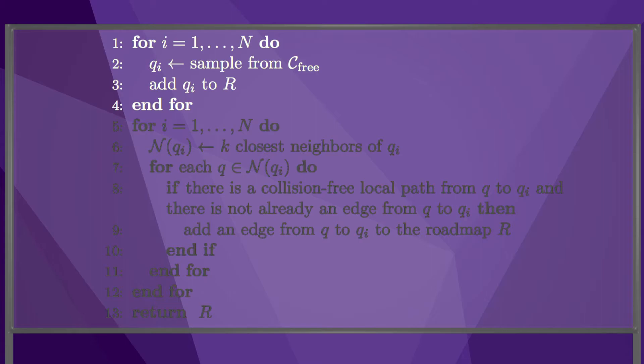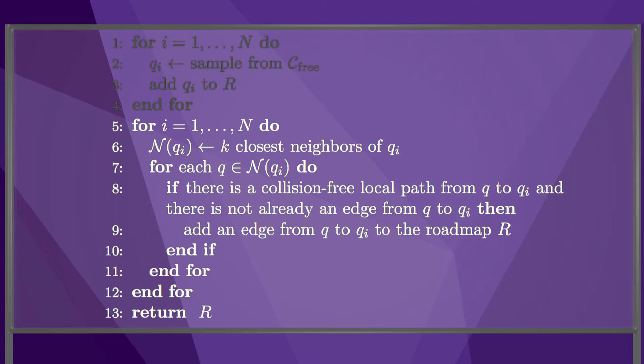The n free space configurations generated in the first phase of the algorithm are the nodes of the graph. The second phase of the algorithm tries to connect the nodes with edges. For each node, we find a set of k nearby nodes. Then, for each of these neighbor nodes, we try to find a path from the original node to the neighbor.